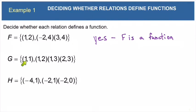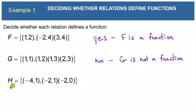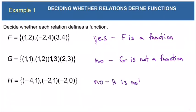Now when we look at relation g, the first thing we see is that the x value of 1 matches a y value of 1. But then the x value of 1 also matches a y value of 2, and it also matches a y value of 3. So for this reason, relation g is not a function. Now look at relation h. The x value negative 2 is used twice — it matches a 1 and also matches a 0. So this keeps h from being a function. So h is not a function.